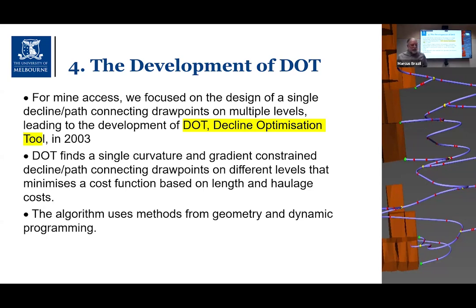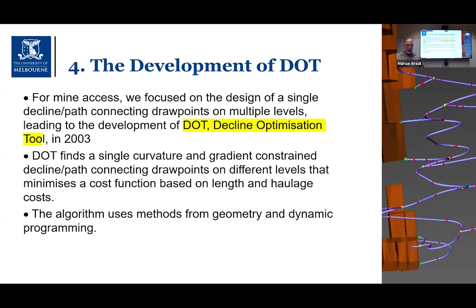DOT finds a single curvature- and gradient-constrained decline or path that connects draw points on different levels and minimizes a cost function based on both length and haulage, incorporating all the requirements we had from industry. You can see an example output on the right: a single decline with cross-cuts coming off it — short paths leading from the decline to access points on the ore body. The algorithm uses Dubins path theory, computational geometry, and dynamic programming to achieve optimal networks.